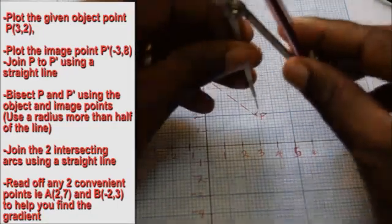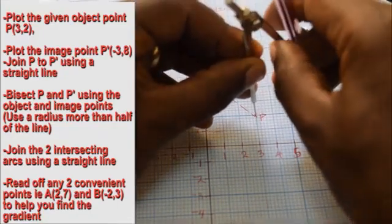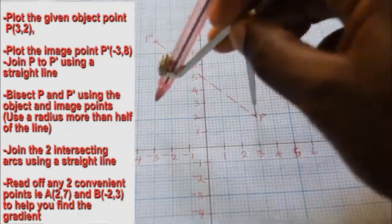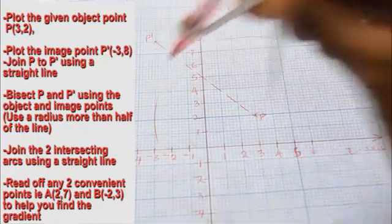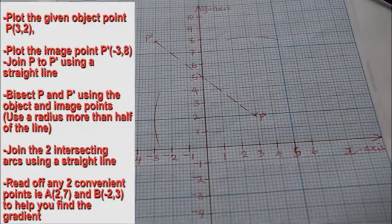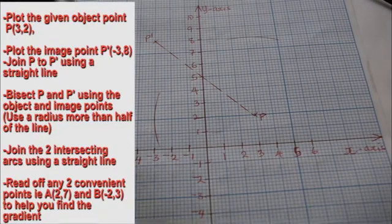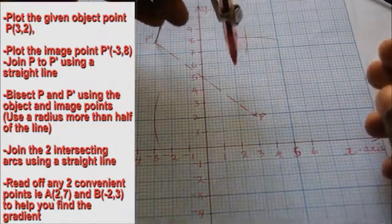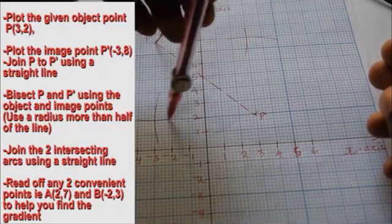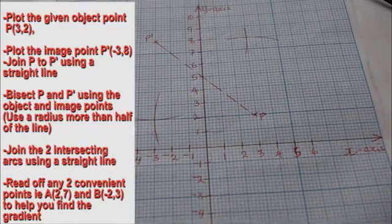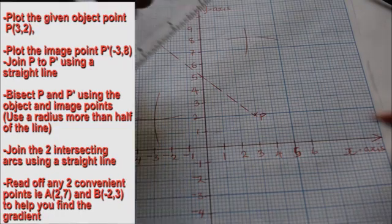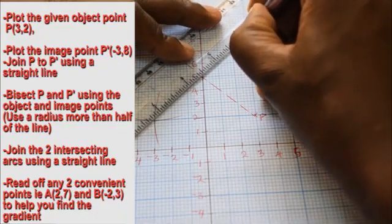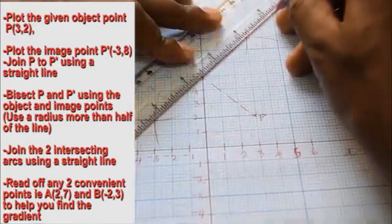Bisect the line PP' using the object and image points. After bisecting, join the two intersecting arcs using a straight line.